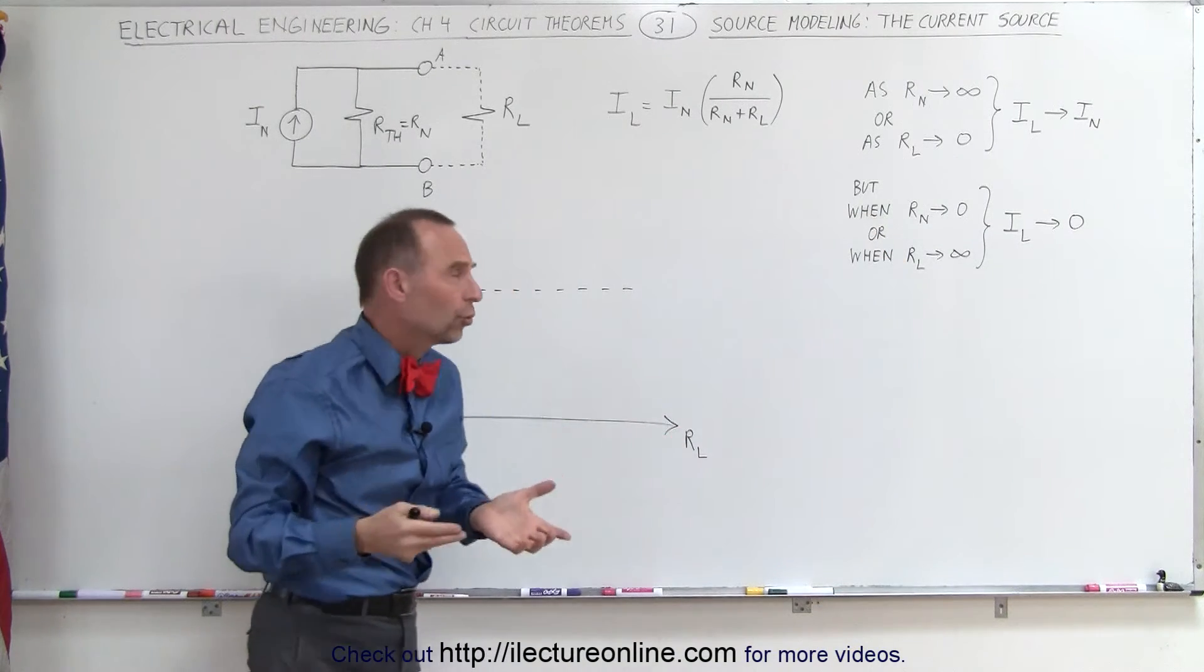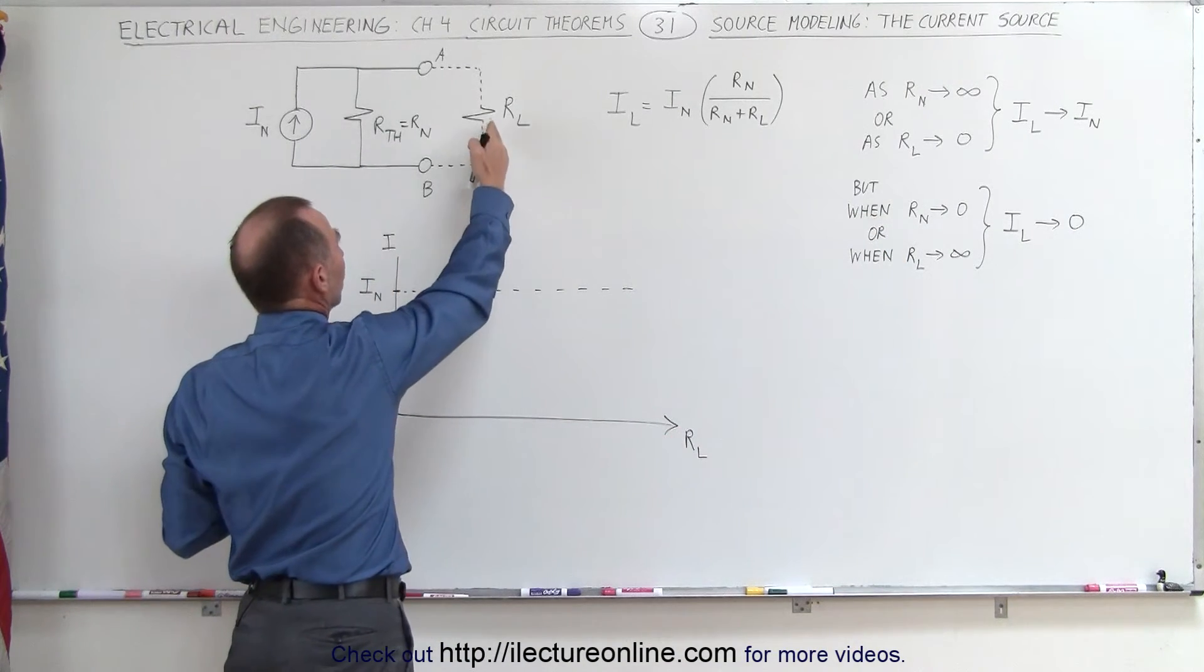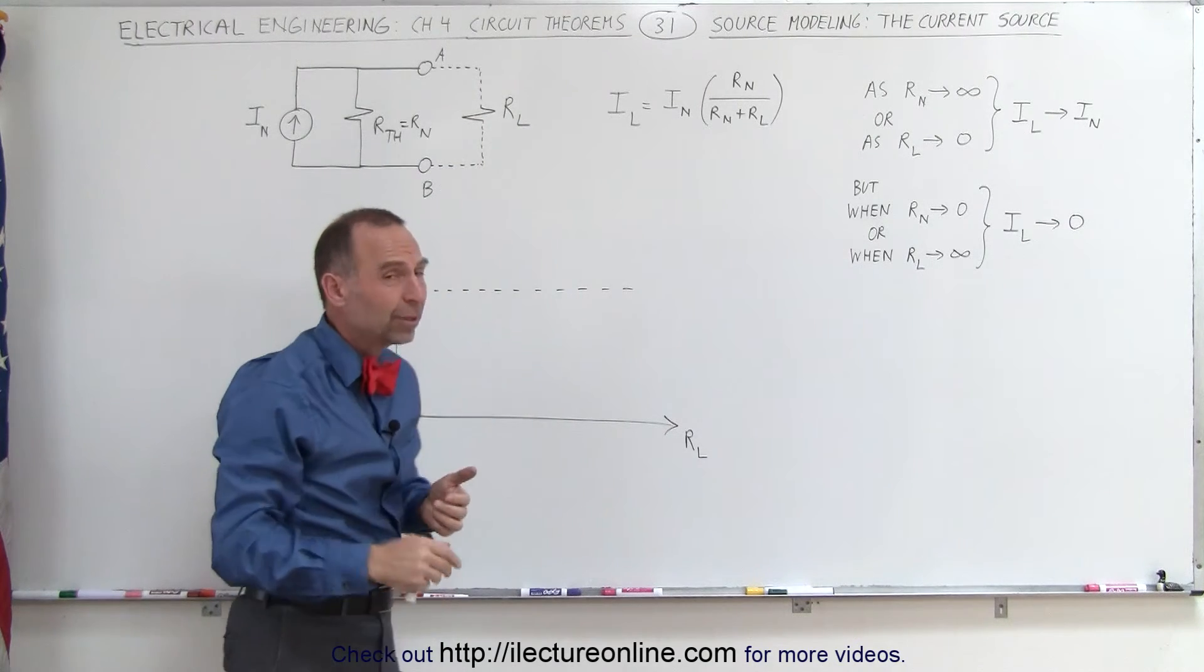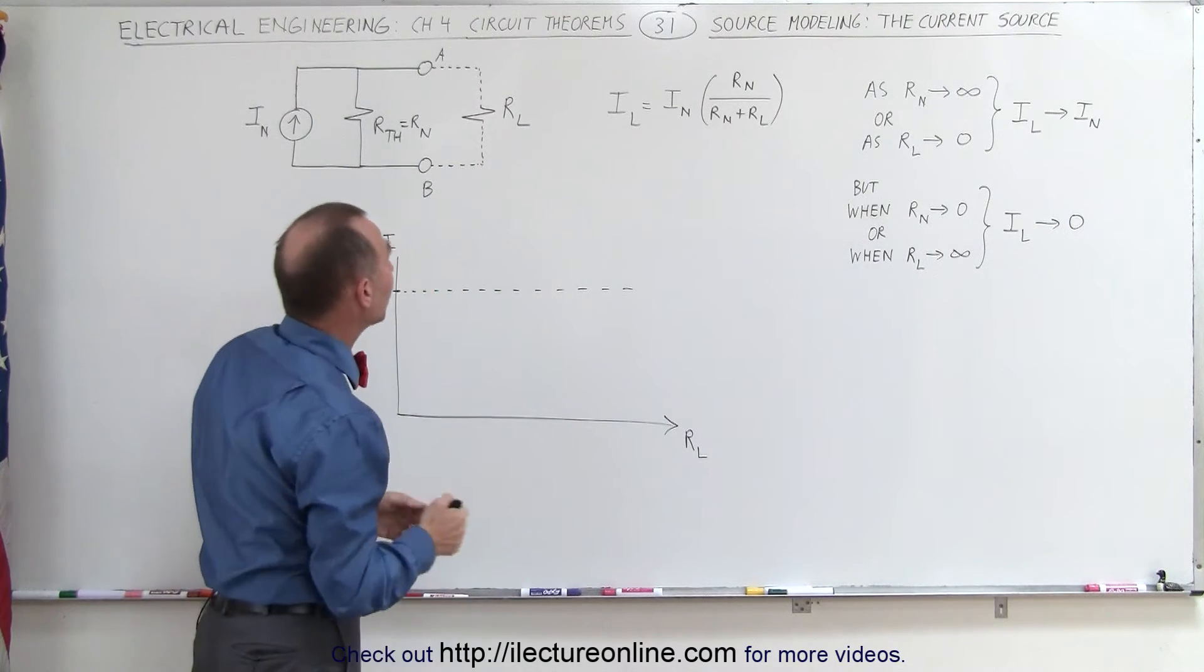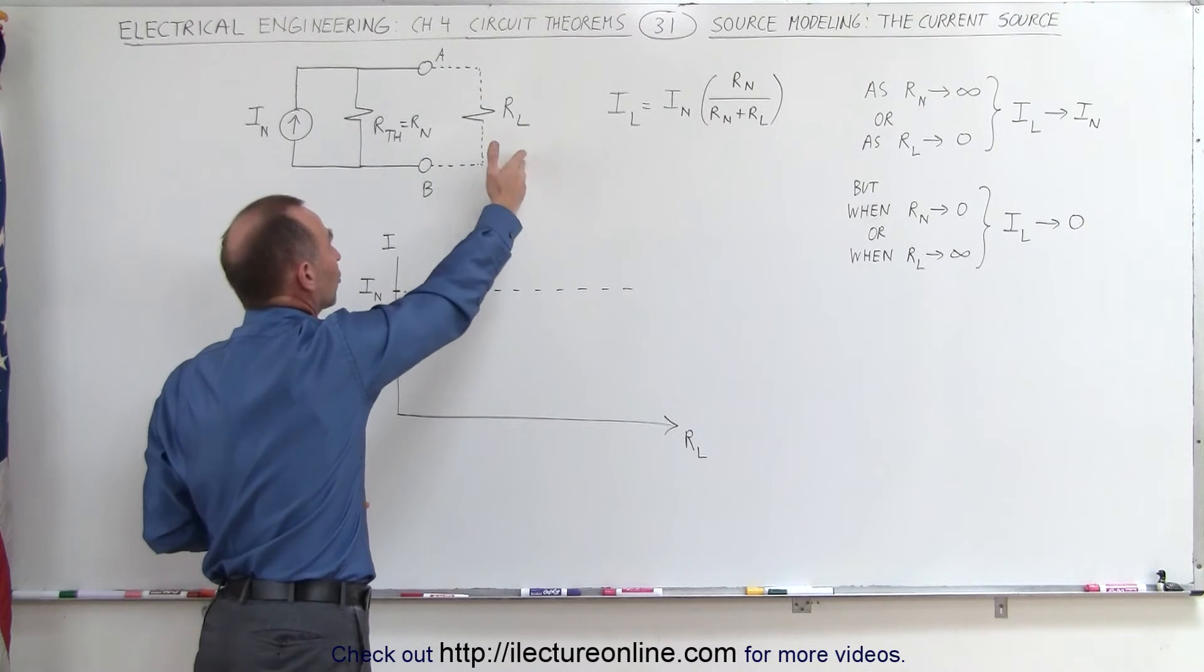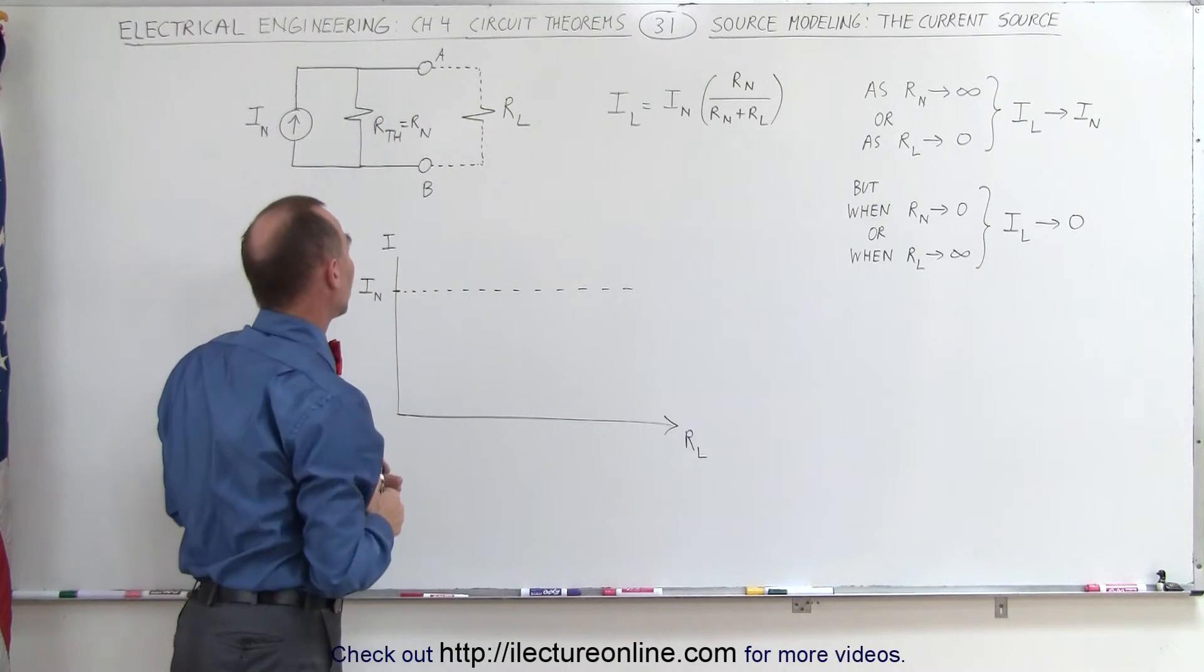So an ideal current source, you would expect the current through the load resistor to stay constant regardless of the value of the load resistor, but that's not the case. In a real scenario, the current through the load resistor will decrease as the load resistor gets large as compared to the internal resistance or the Norton resistance.